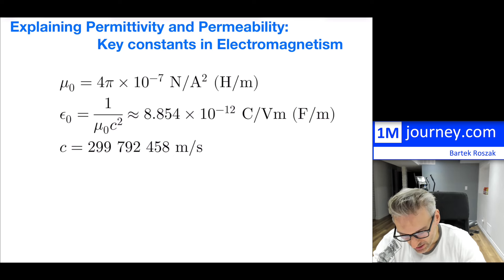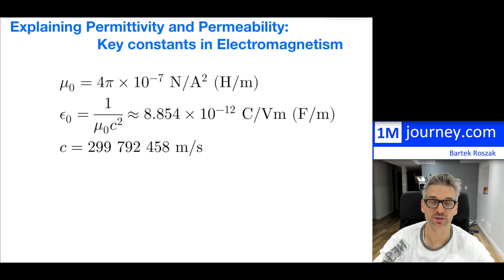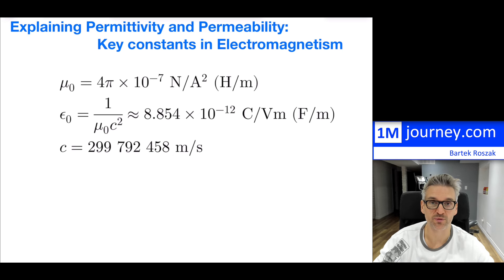You have this little naught subscript. You might wonder: why didn't we just write mu or epsilon? Well, the naught actually means with regards to vacuums. So it's the permittivity within a vacuum — which means just free space, there is no matter — and then permeability with respect to a vacuum, or again with respect to free space.